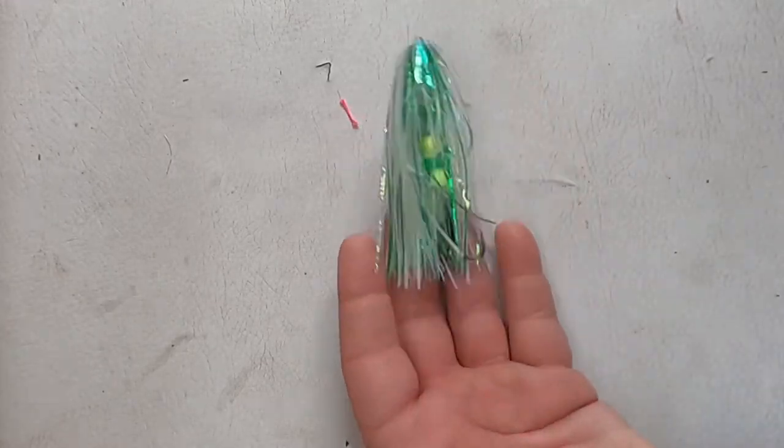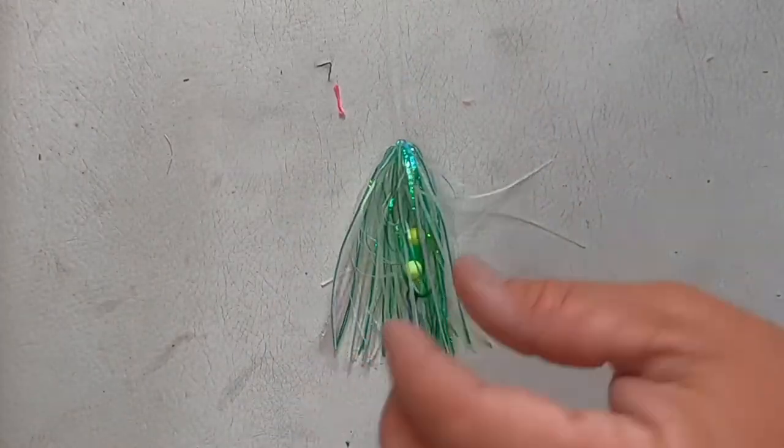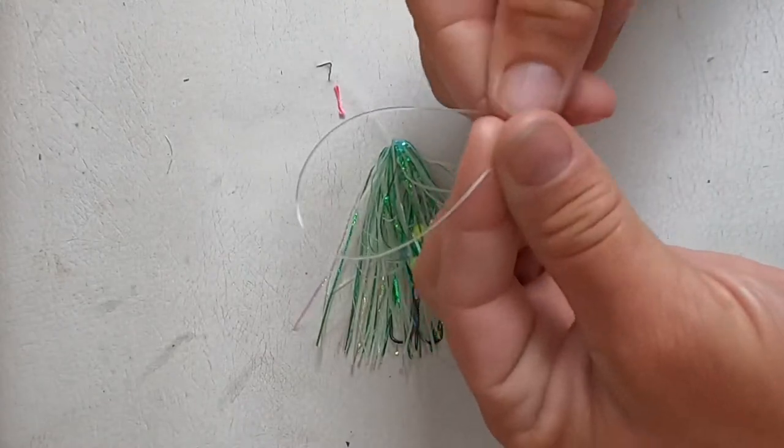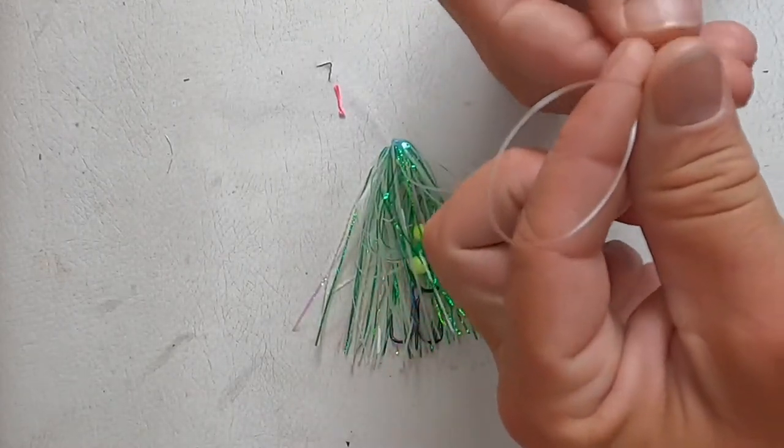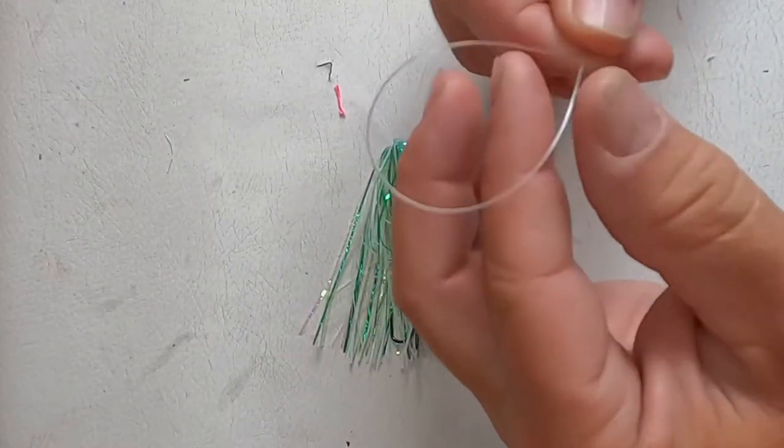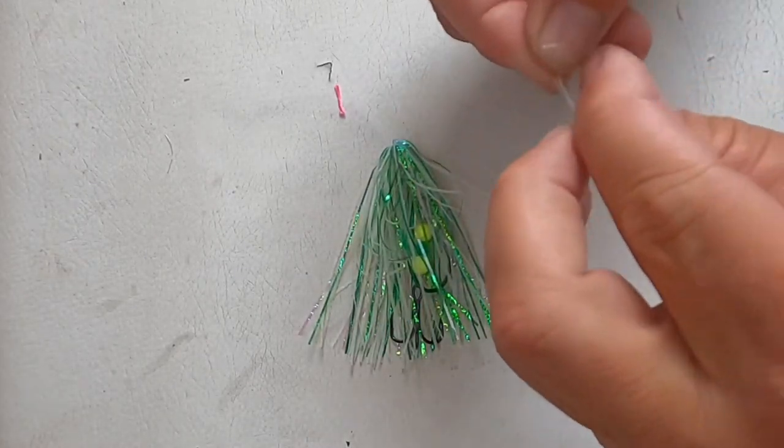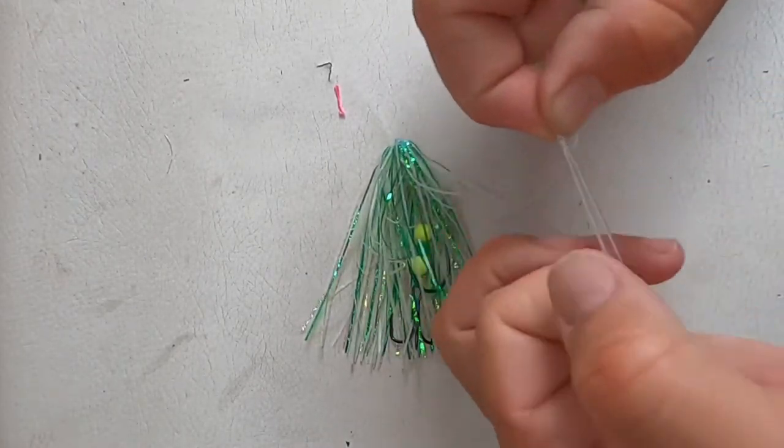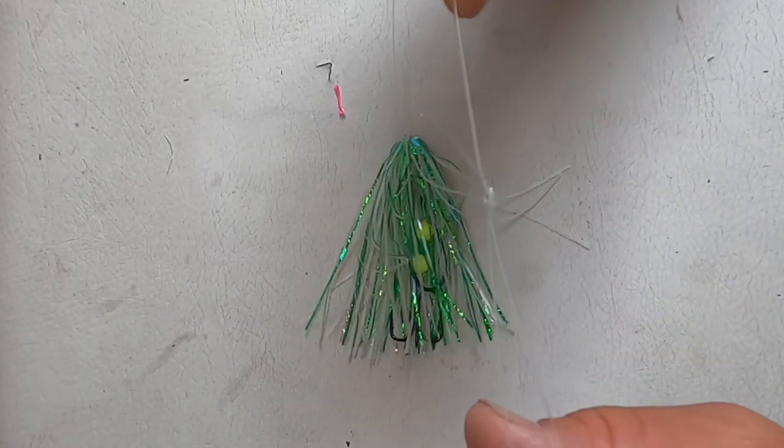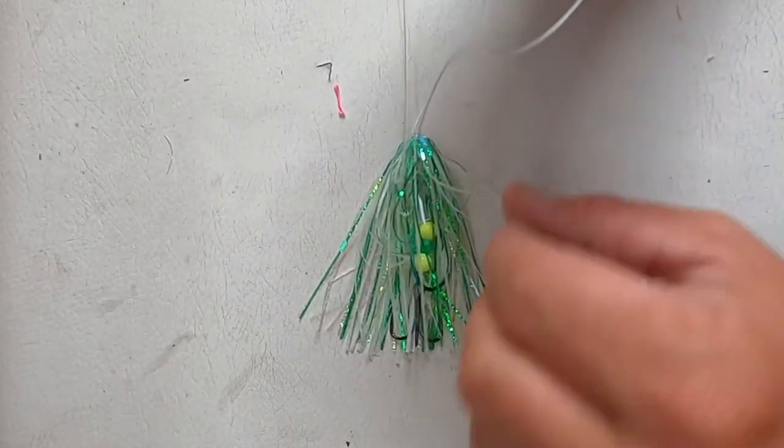So now there's your fly, that harness is hidden. And then to terminate this end we're just going to take that leader, flip it over, and tie an overhand knot. One single overhand will get the job done, and we're ready to fish it.